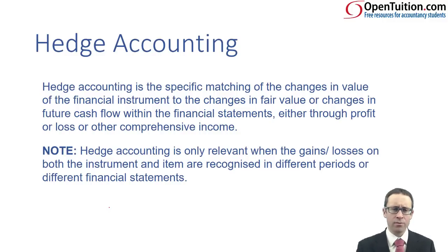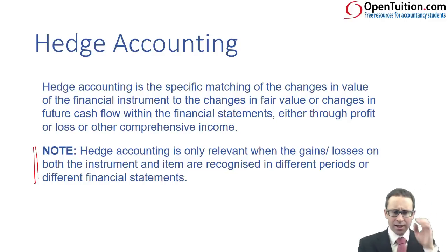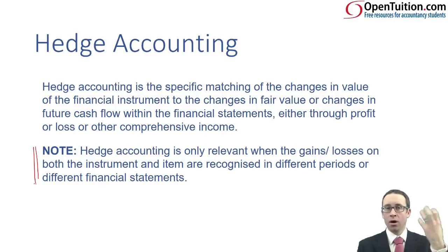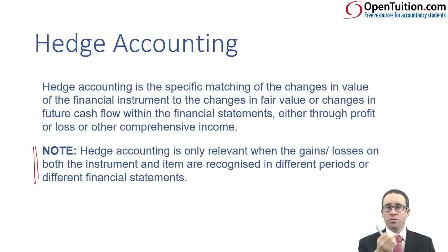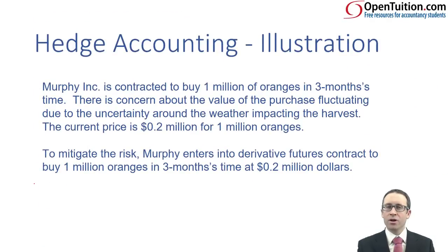In terms of hedge accounting, remember — it's the specific matching of the change in the value of a specific item, which is either fair value or future cash flow. It's only relevant, however, when the gains and losses on both the instrument and the item are recognised in different periods — one is recognised this year and one not until a later date — or within different financial statements. So maybe there's a gain in one on profit or loss and the other goes through OCI. It doesn't match up. We'd like them both in OCI or both in profit or loss. When there's a mismatch, that's the key word: accounting mismatch.